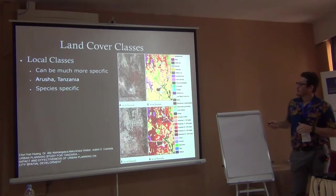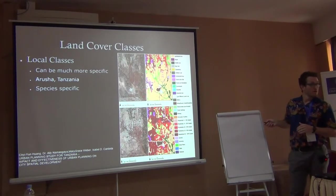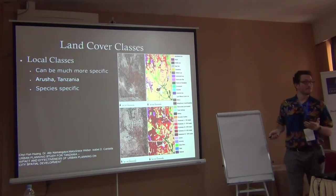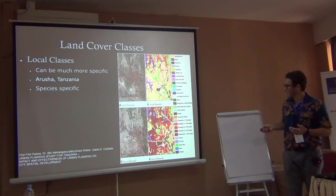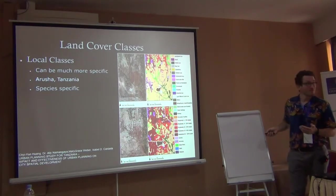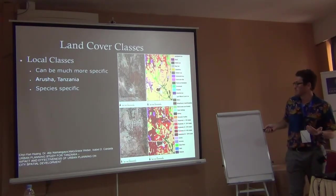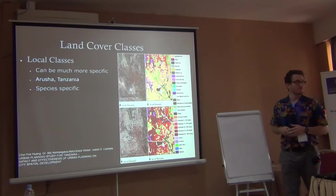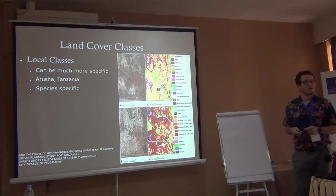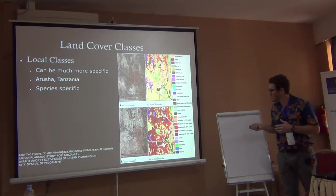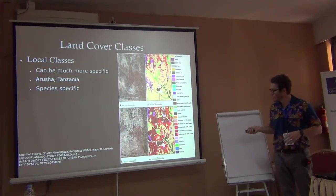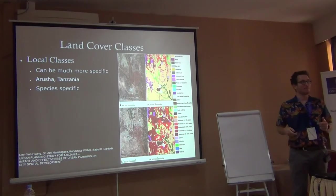In Tanzania, Arusha — here's the satellite data and here's the classification. They have a really high number of classes: residential with four or five different levels based on the amount of impervious surfaces. This is very specific to urban systems — they want detailed information about the types of urban lands in Arusha.